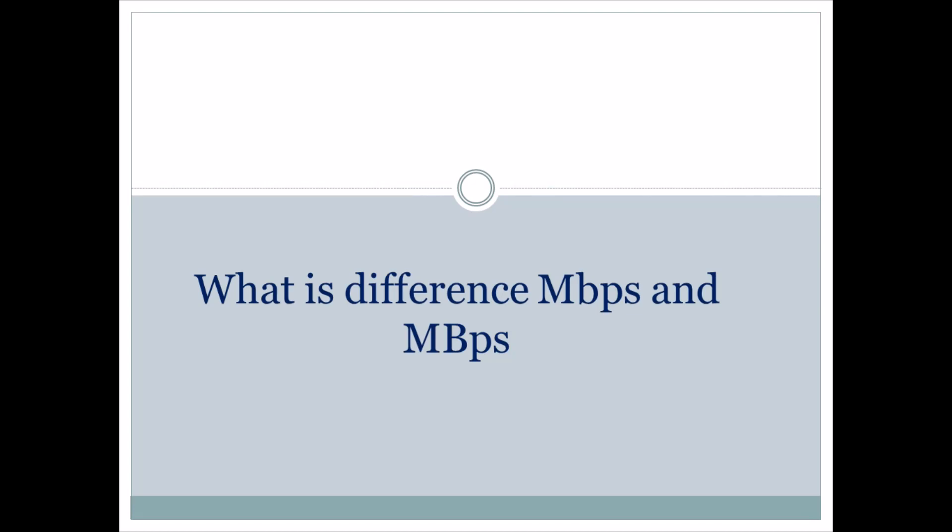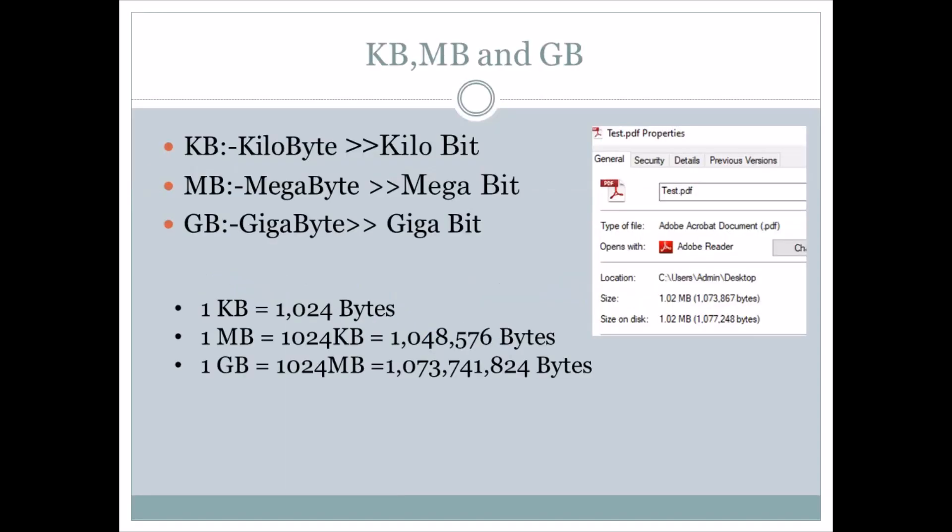Welcome to another video from Simple Networking. Today we are going to see the difference between bits and bytes. When you are purchasing an internet connection, the service provider will say the internet speed is 80 Mbps, but when you are downloading a file you are getting only 7 to 8 MBps. We will see the reason for this difference here.